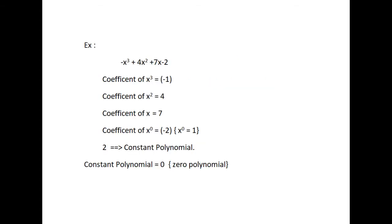Each term of a polynomial has a coefficient. So in minus x cubed plus 4x squared plus 7x minus 2, the coefficient of x cubed is minus 1, the coefficient of x squared is 4, the coefficient of x is 7, and minus 2 is the coefficient of x to the power 0. Minus 2 is an example of a constant polynomial. The constant polynomial 0 is called the zero polynomial.